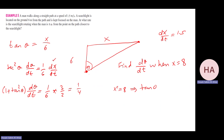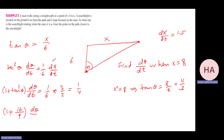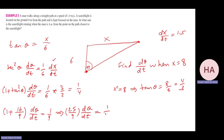So I have (1 + 16/9) · dθ/dt = 1/4, which means (25/9) · dθ/dt = 1/4. Therefore dθ/dt = 9/(4·25) = 9/100 = 0.09.